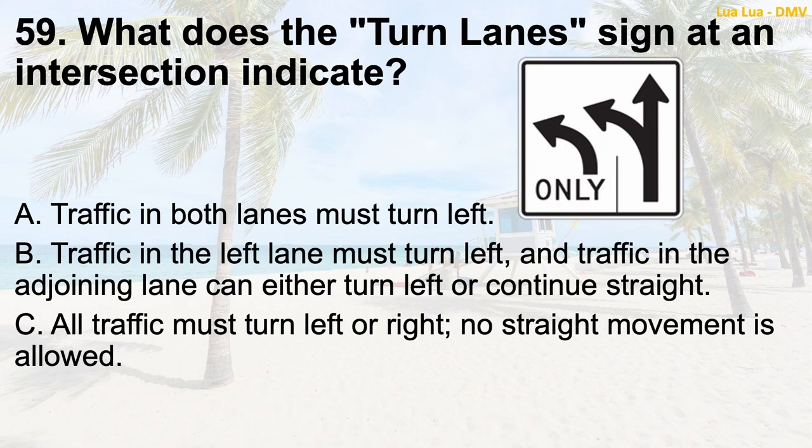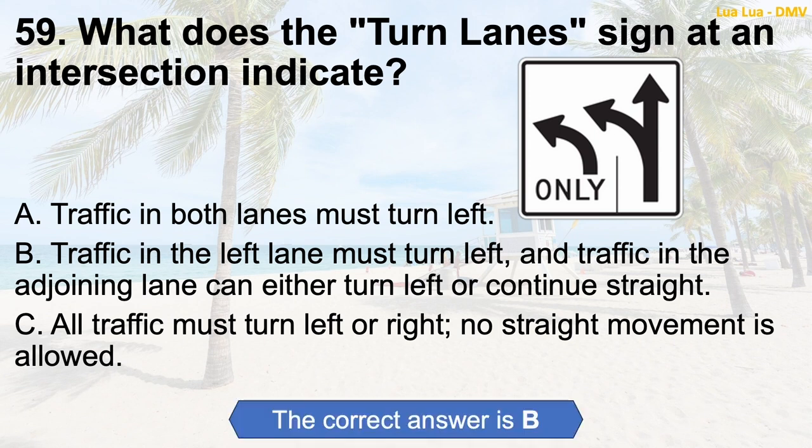Question 59: What does the 'turn lanes' sign at an intersection indicate? A. Traffic in both lanes must turn left. B. Traffic in the left lane must turn left, and traffic in the adjoining lane can either turn left or continue straight. C. All traffic must turn left or right — no straight movement is allowed. The correct answer is B: Traffic in the left lane must turn left, and traffic in the adjoining lane can either turn left or continue straight.